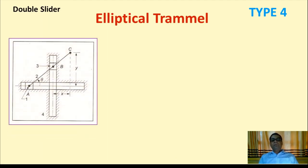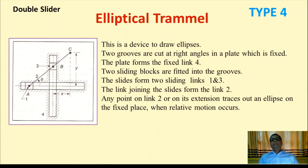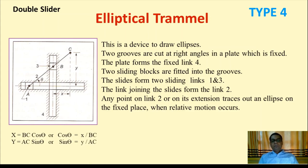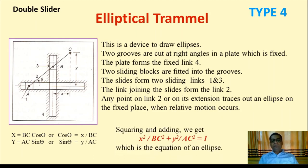In the Elliptical Trammel, there are two slots, two sliding piston blocks, and one connecting rod. This device is used to draw ellipses. Two grooves are cut at right angles in a fixed plate (fixed link 4); two sliding blocks fitted into the grooves form sliding links 1 and 3, and the link joining the sliders forms link 2. Any point on link 2 or its extension traces an ellipse. At any instant: x = BC·cos θ and y = AC·sin θ. Squaring and adding: x²/BC² + y²/AC² = 1, which is the equation of an ellipse.